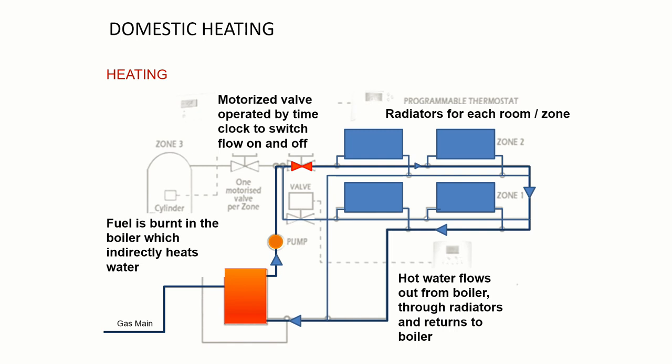We've got a motorized valve which is the red bow tie and that turns on and off the system. It can stop the pipe from flowing or it can allow it to flow and that's usually operated by a time clock, the sort of thing you have on the wall in the kitchen that tells the heating when to turn on.